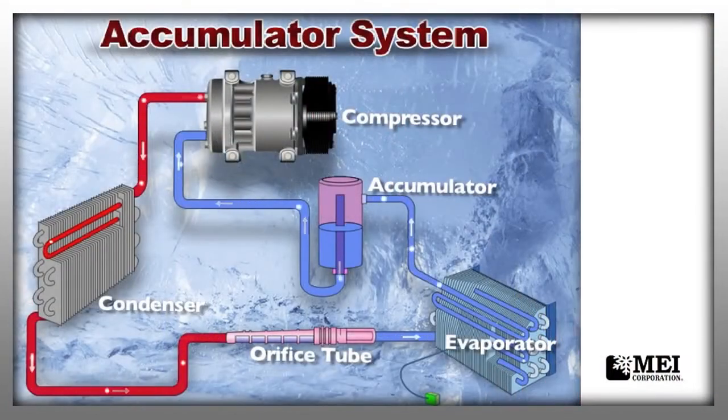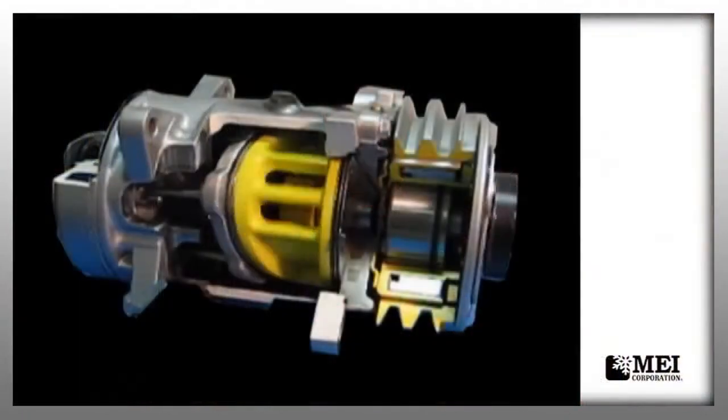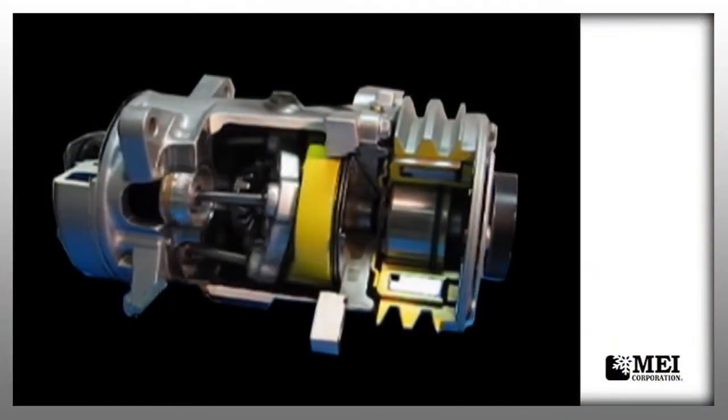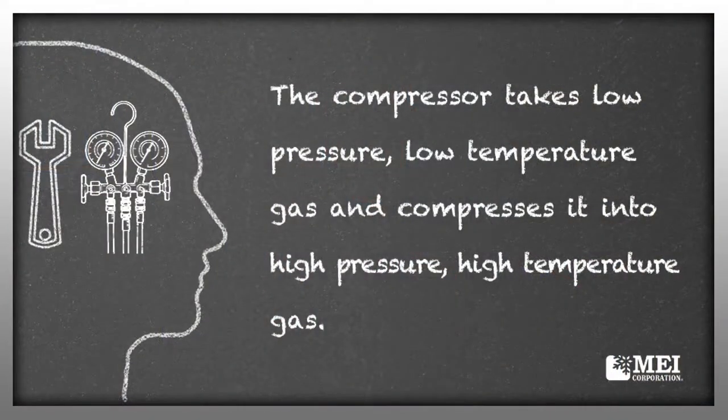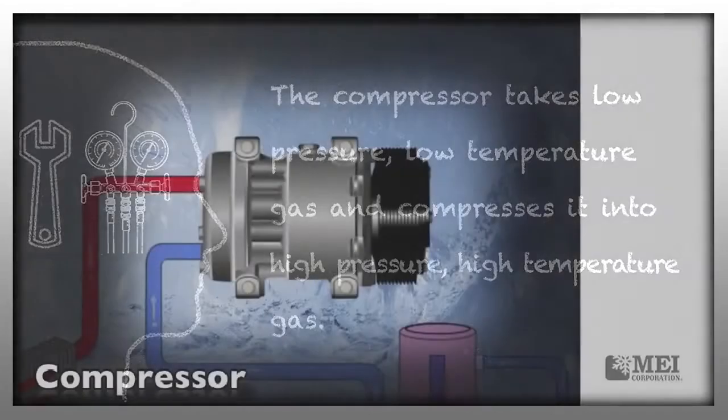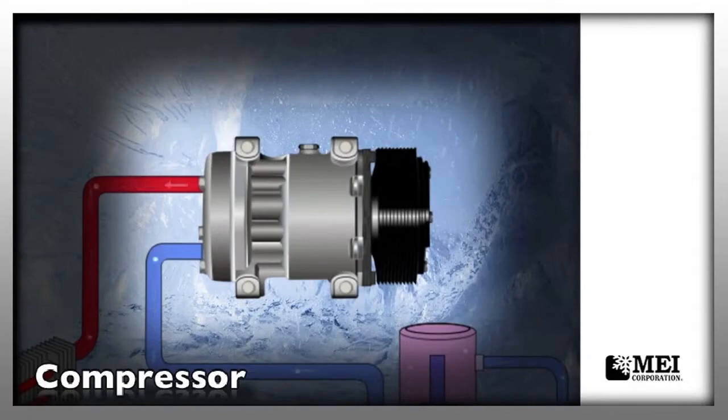Let's discuss our orifice tube accumulator system. The compressor, as we talked about, we want to think of it as a motor — it has pistons, rods, a crankshaft, needs a lubrication system and a cooling system. There are two lines: one in and one out. The line coming in is your larger line — your suction side — and it should be sweating like a glass of iced tea. The compressor takes that low pressure, low temperature gas and compresses it into a high pressure, high temperature gas. It then exits through the discharge line, which is the smaller of the two lines, and it'll be very hot to the touch. So it's very normal for one side to be sweating and the other to be very hot. From the compressor, the line goes to the top of the condenser.